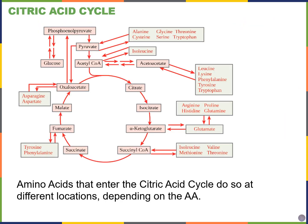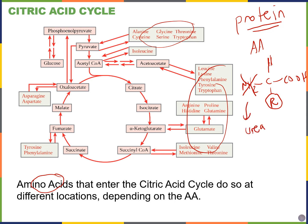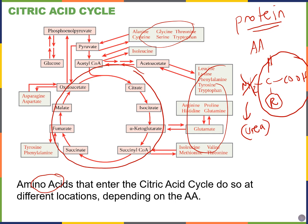You don't have to memorize the detailed diagram, but the point is that amino acids — the subunits of proteins — can enter the citric acid cycle. If you're on a low-carb diet relying mainly on proteins, those proteins are chopped into individual amino acids. The amino group is removed, usually turning into ammonia and eventually excreted as urea through the kidneys or released as sweat. The remaining portion can then enter different stages of the citric acid cycle or even earlier steps.